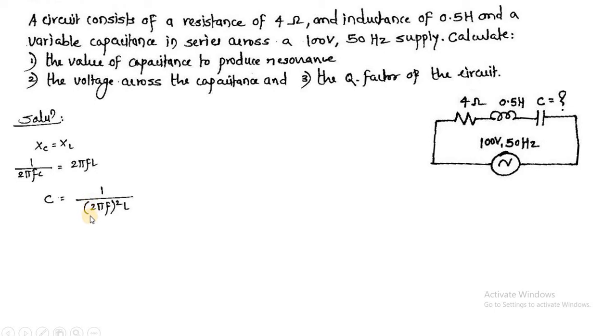You can find out C. C is equal to 1 upon 2πF term will have square because this 2πFL comes in the numerator. So 2πF term will have square and will be L. Putting the value: 2 square is 4, then π square, then F square, that is 50 square into 0.5 henry inductor. It is going to give you the value of the capacitance is 20.26 microfarad.